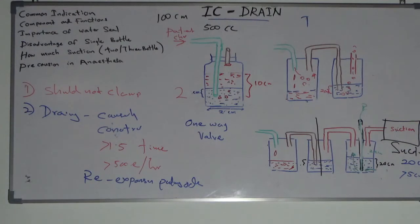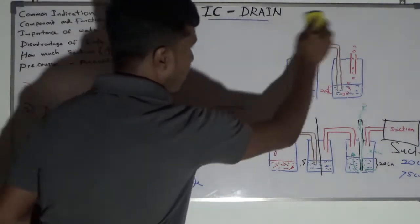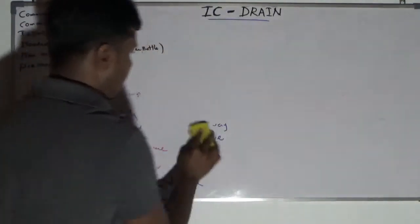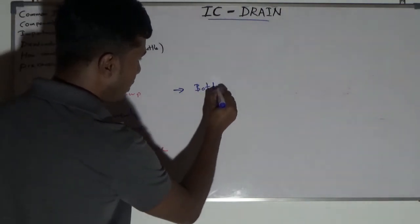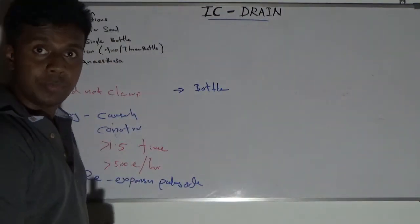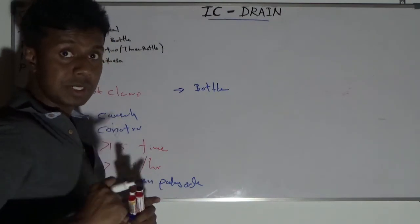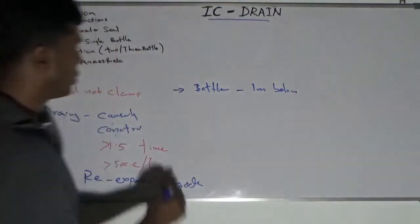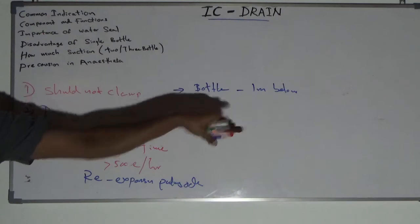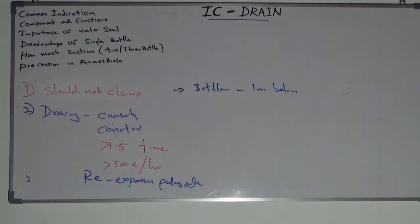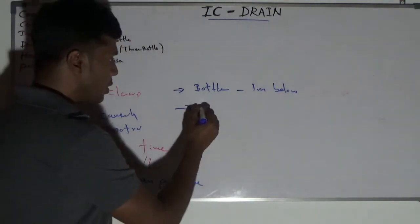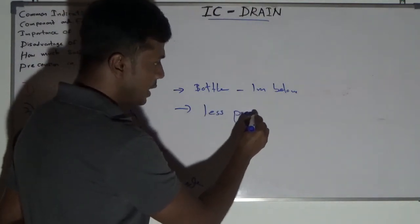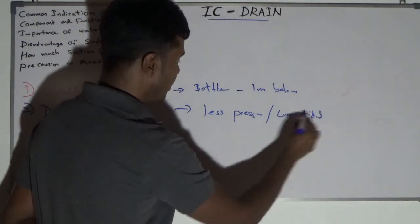Now we will know the pathology behind re-expansion pulmonary edema. When you are mechanically ventilating the patient, the bottle should always be kept about 1 meter below the patient's chest. During mechanical ventilation, should not clamp the tube, and the bottle should be 1 meter below from the patient's thoracic cavity. In case of continuous air leak, you have to use less pressure for ventilation, or low tidal volume ventilation.